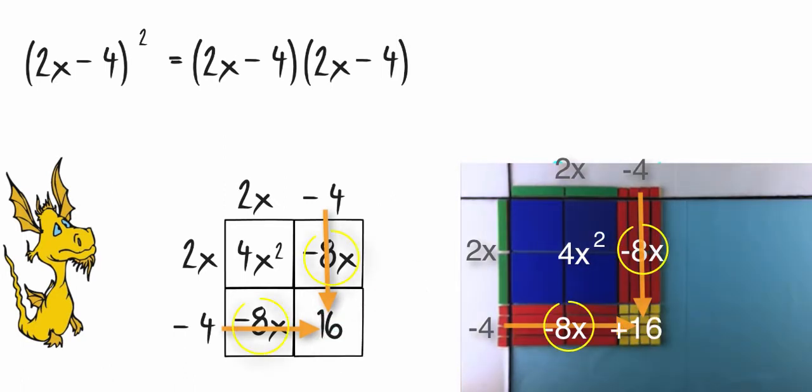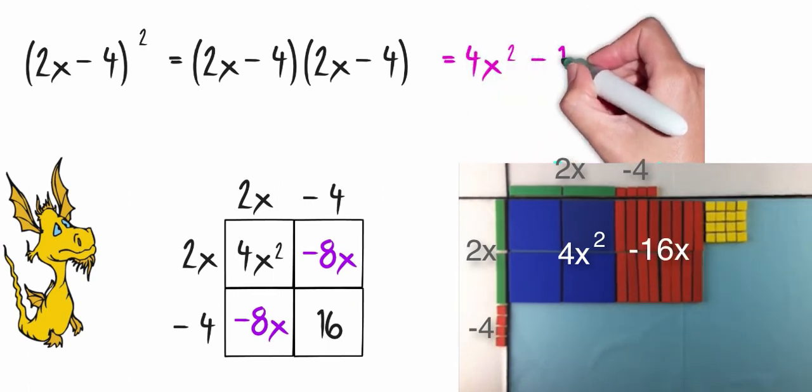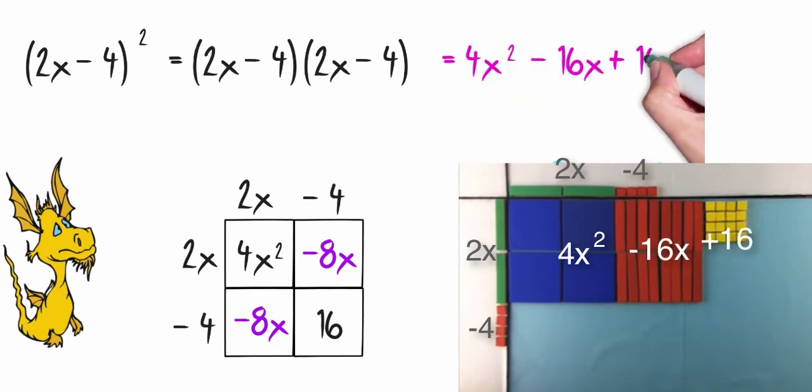Again, you'll notice I have like terms. So when I'm giving my final answer, I want to make sure I combine those. So that would give me a total of 4x squared minus 16x plus 16.